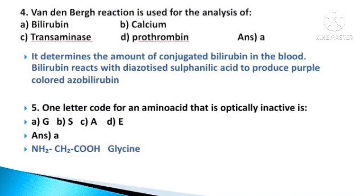Fourth question: Vandenberg reaction is used for the analysis of — options: bilirubin, calcium, transaminase, and prothrombin. The answer is option A, bilirubin. The Vandenberg reaction determines the amount of conjugated bilirubin in the blood. The bilirubin reacts with diacetized sulfanilic acid to produce purple-colored azo bilirubin.